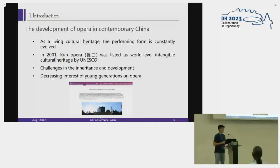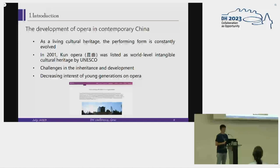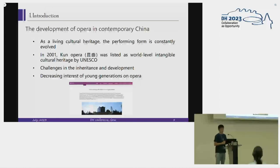In the contemporary era, Chinese opera, as a living cultural heritage, is still evolving. Artists are reforming and innovating the performing form to maintain vitality and attraction, and to drive better development. In 2001, Kunqu opera was listed as a world-level intangible heritage by UNESCO, which also made the public and government more aware of the value and importance of traditional opera. Accordingly, more resources and funding are being put into the development and preservation of the operas.